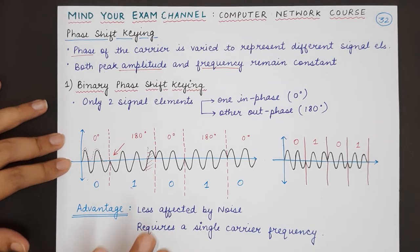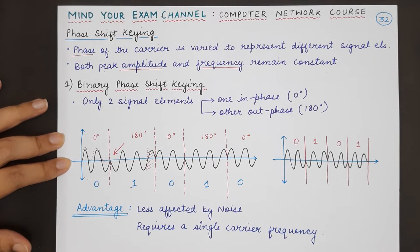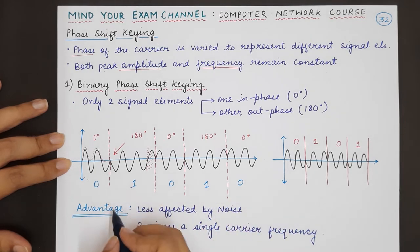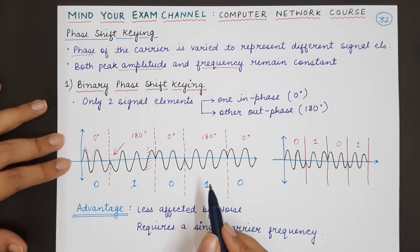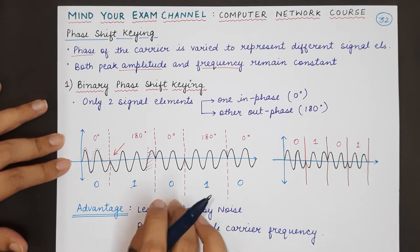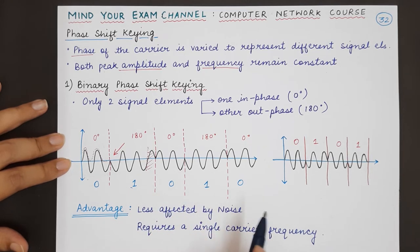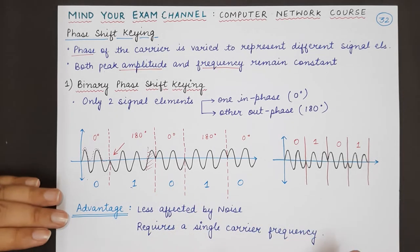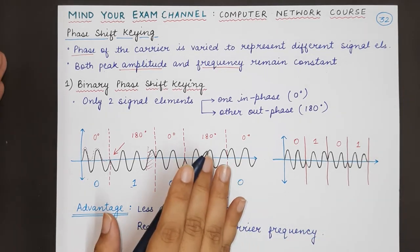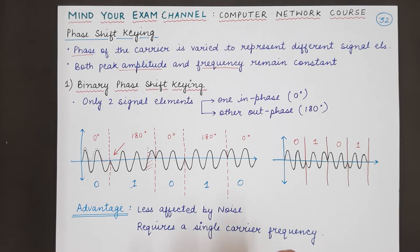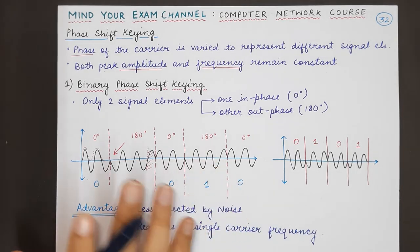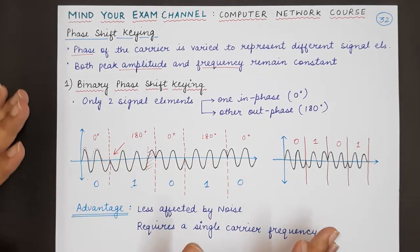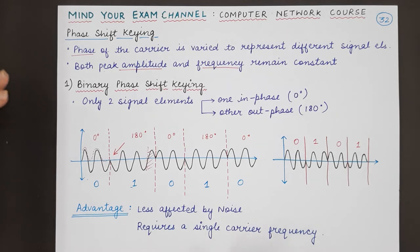Phase shift keying is very important because we have two main advantages. Firstly, changing of phase is less affected or less susceptible by noise because noise can easily change the amplitude of a carrier signal but noise is unable to change the phase of the original carrier signal when it is getting transmitted.